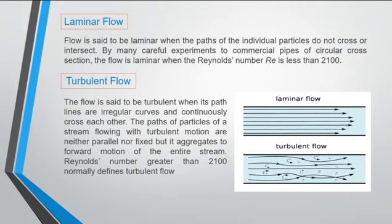The flow is said to be laminar when the paths of the individual particles do not cross or intersect. By many careful experiments to commercial pipes of circular section, the flow is laminar when the Reynolds number RE is less than 2100.